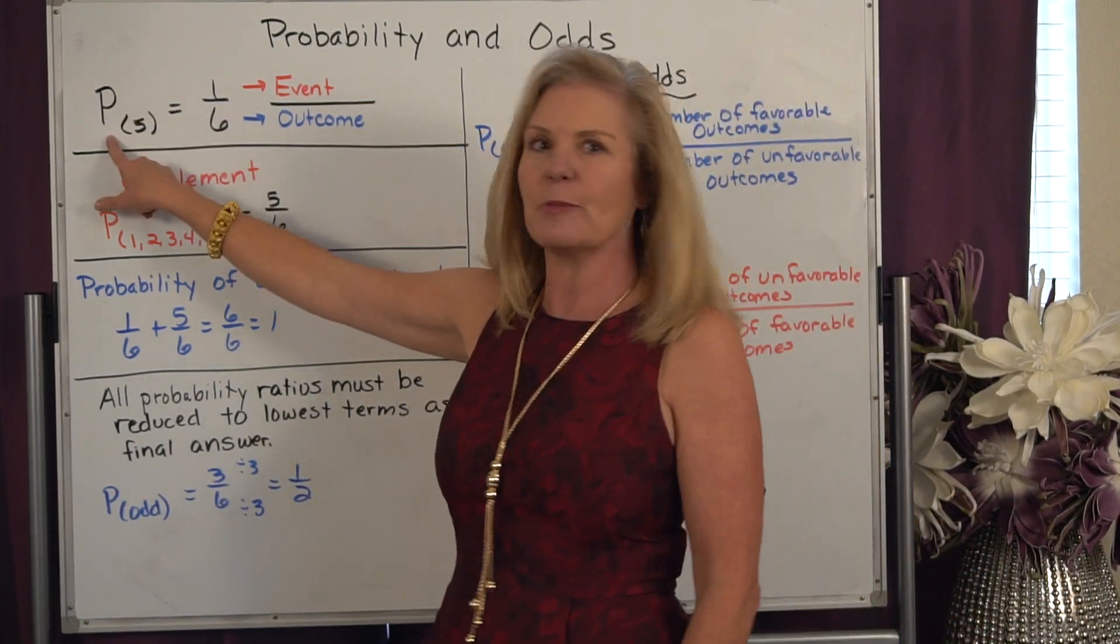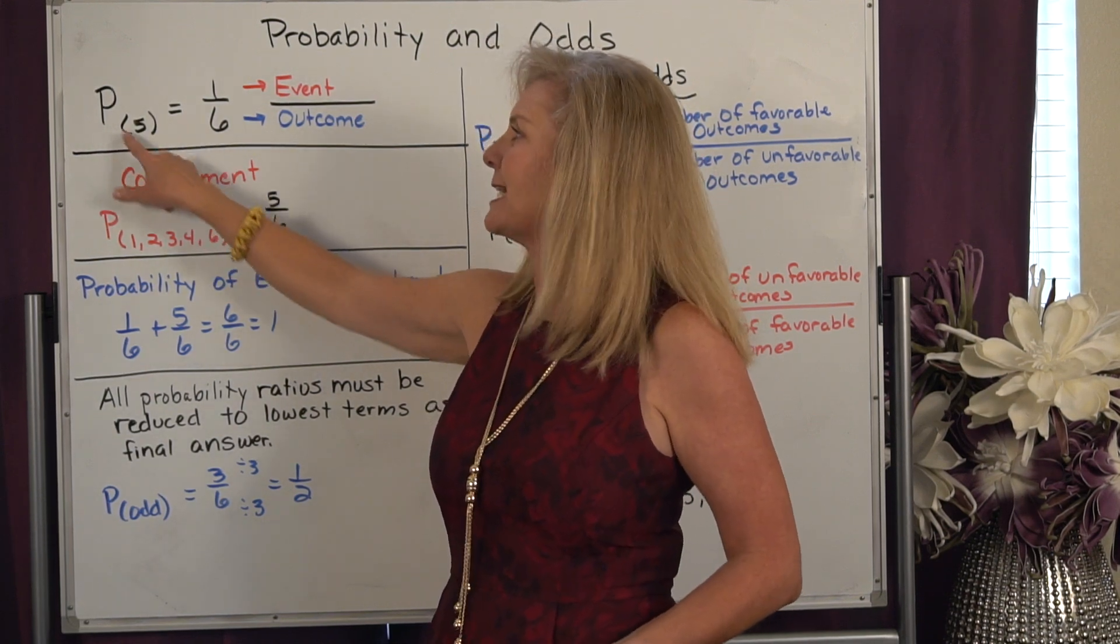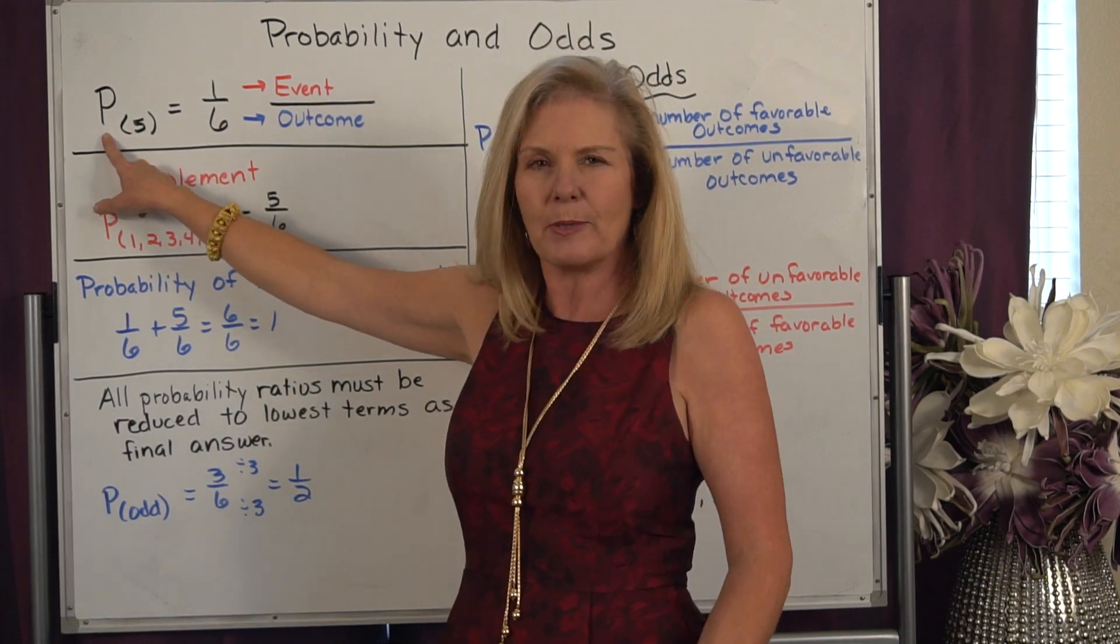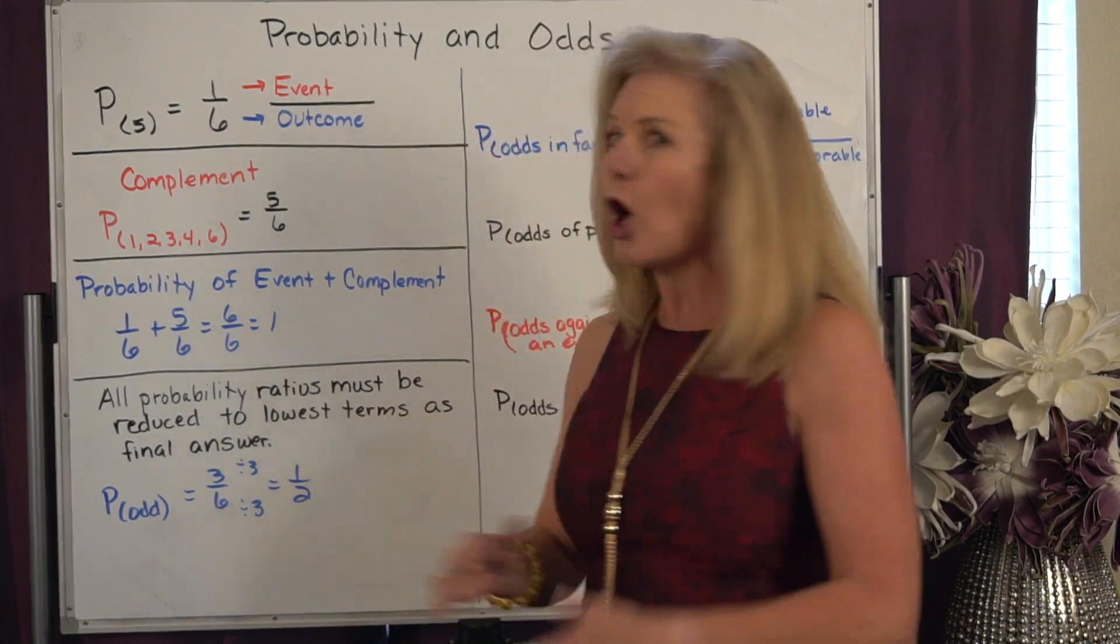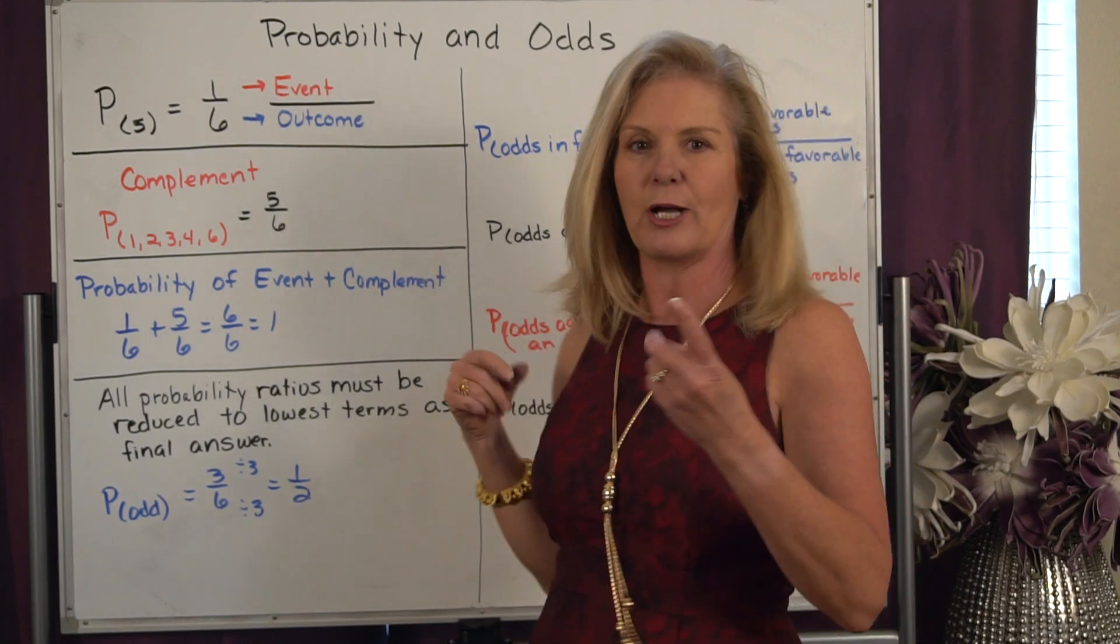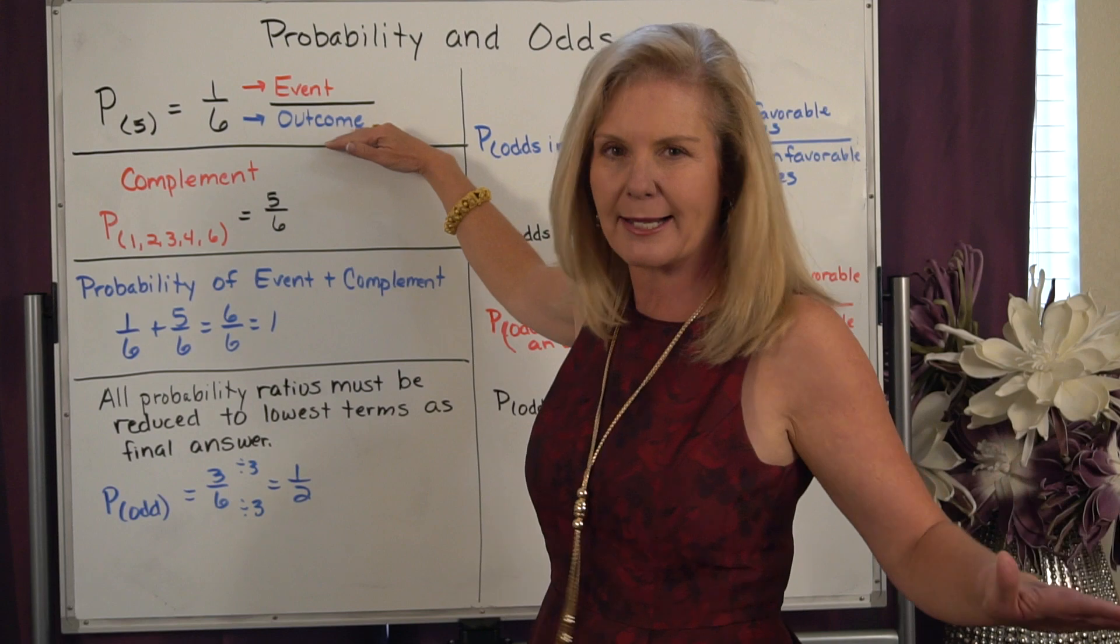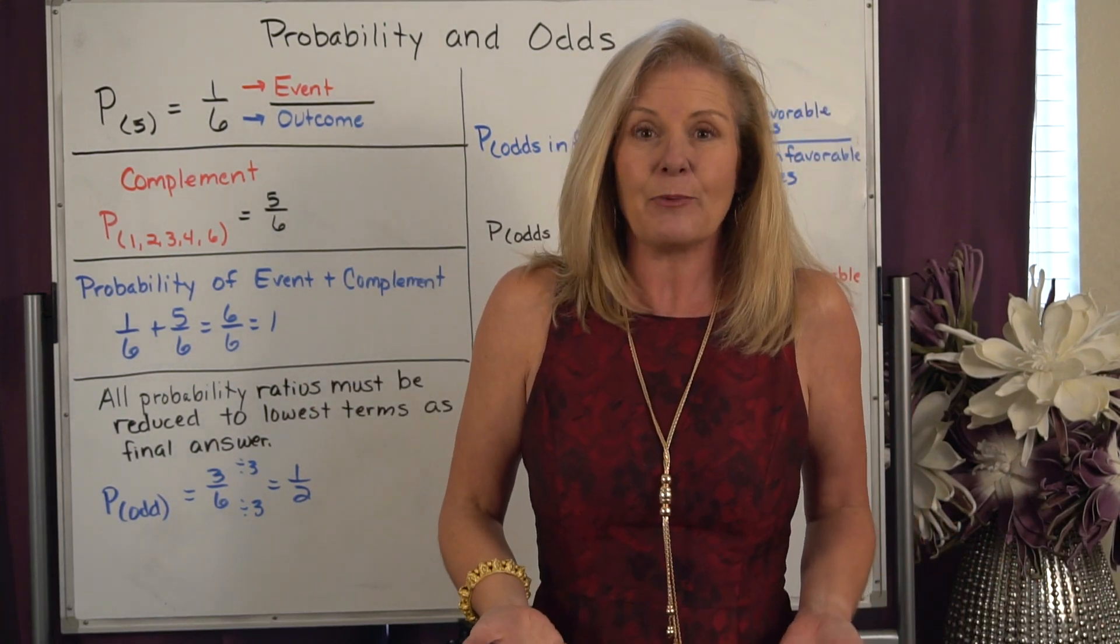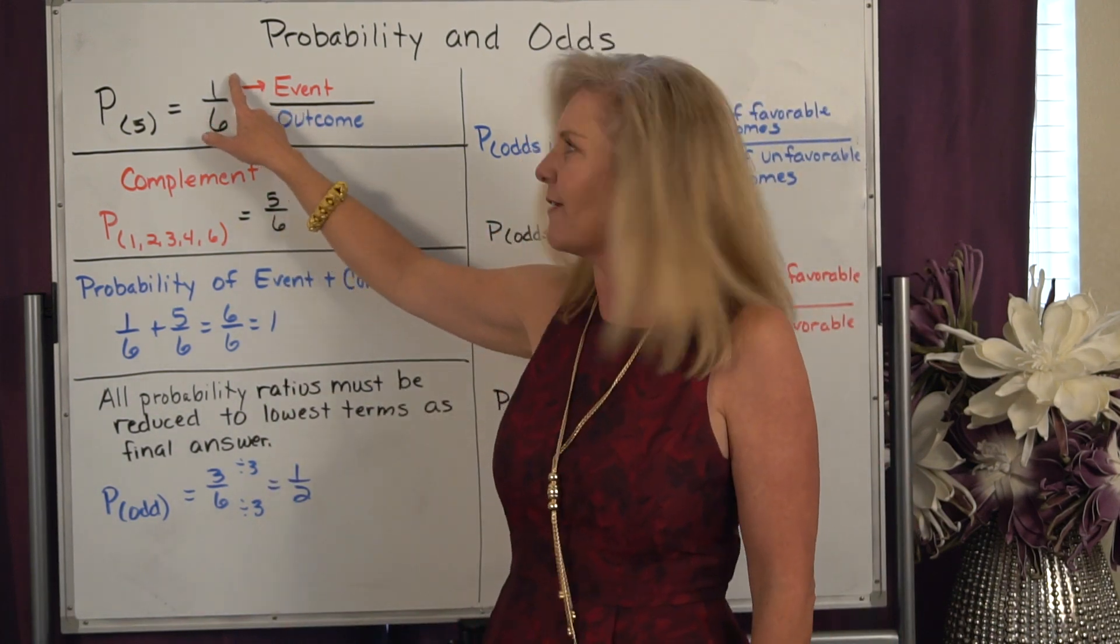When we write our probability ratio, we always put it in parentheses. So right here, I want: what is the probability that I'm going to roll a 5 on a number cube? Well, all the ways that you can roll a number on a number cube are six. We have 1, 2, 3, 4, 5, 6. That's my outcome - it's all possibilities. What do I want? Well, I want the 5. How many ways can I get the 5? Well there's only one way I can get the 5, so I would write that ratio as 1 to 6.